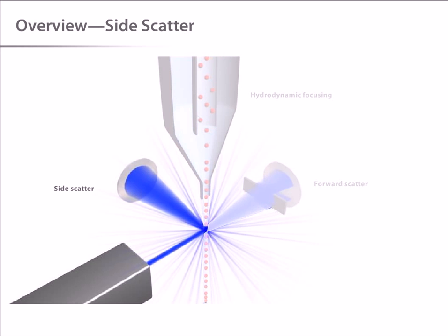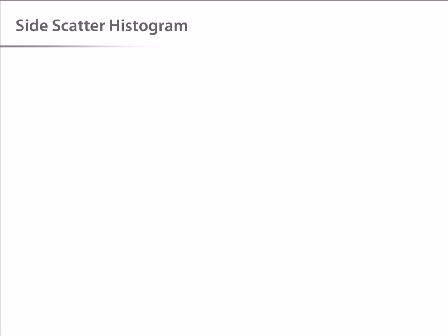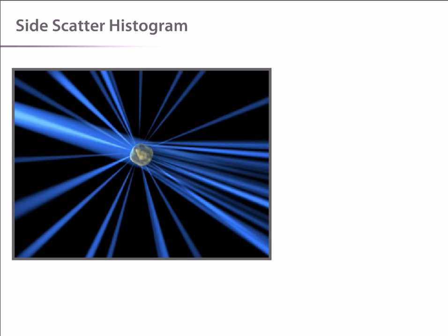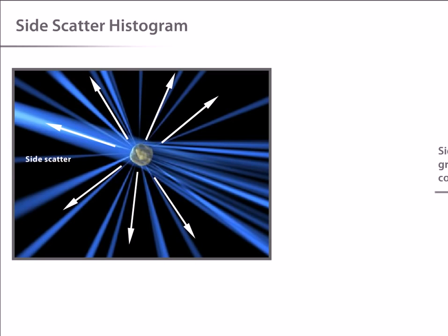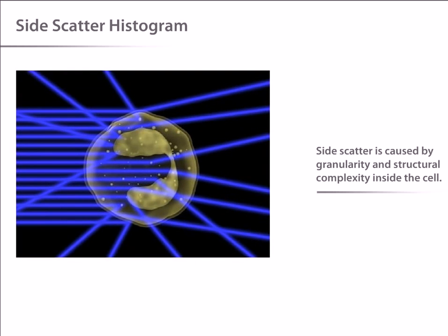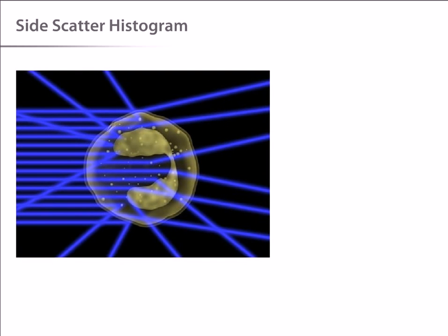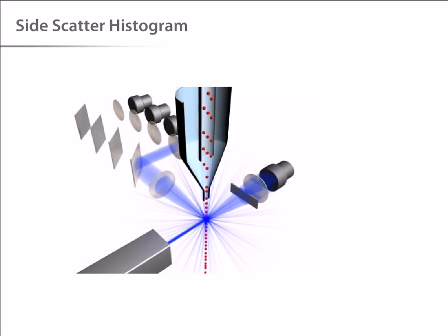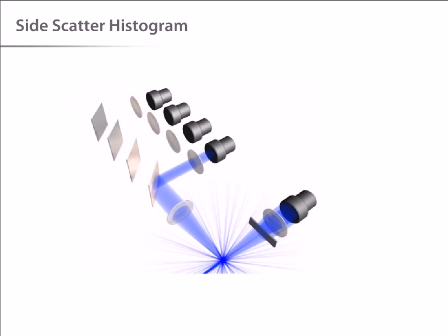Next, let's look at side scatter. As we have already seen, a cell traveling through the laser beam will scatter light at all angles. Light scattering at larger angles, for example to the side, is caused by granularity and structural complexity inside the cell. This side scattered light is focused through a lens system and is collected by a separate detector, usually located 90 degrees from the laser's path.